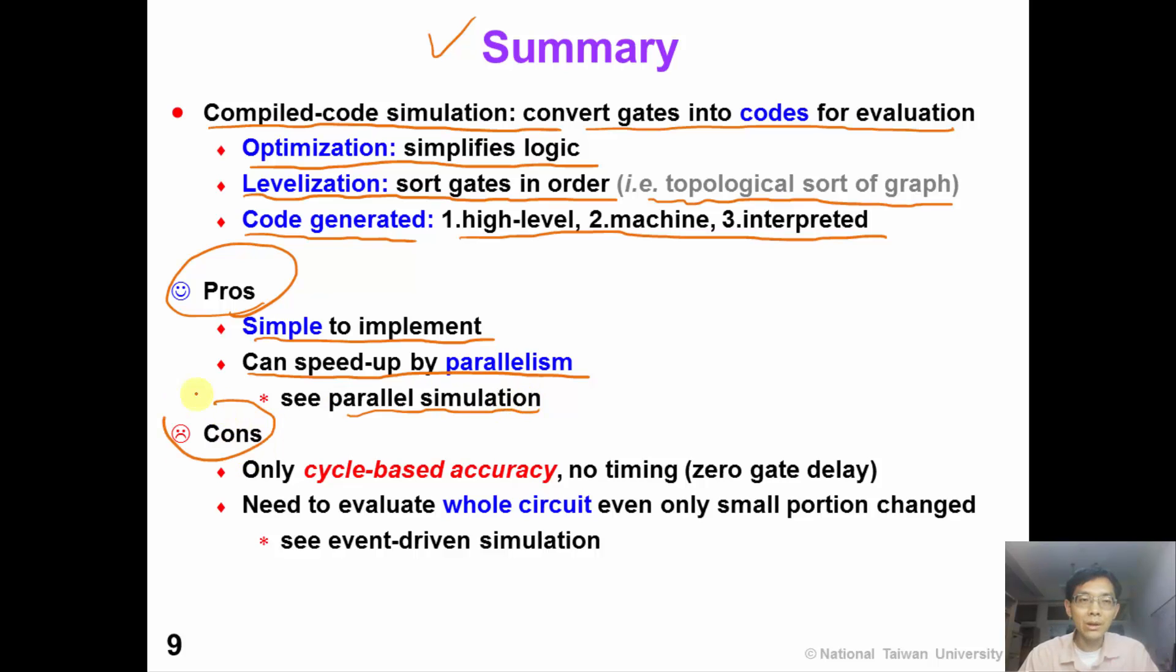However, compiled code simulation is not perfect. Compiled code simulation provides only cycle-based accuracy. That means it does not provide any timing information. It assumes zero gate delay model. The second problem is that we need to evaluate the whole circuit even if only a small portion of the circuit has been changed. So this problem can be fixed by event-driven simulation. Please see our next video.